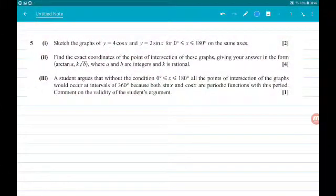Question 5. We've got trigonometry. So part A for two marks. One says to sketch the graph of y equals 4 cos x and y equals 2 sin x for 0 less than or equal to x less than or equal to 180 on the same axis.